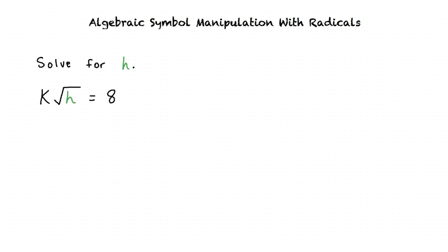We are given k times the square root of h equals 8, and we are asked to solve for h. Our goal in order to solve for h is to isolate h.